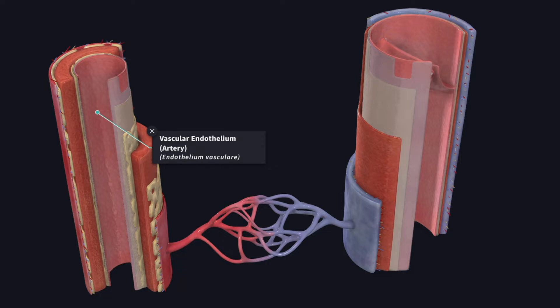The functions of the endothelium include providing a smooth internal lining to the blood vessels and heart. The endothelial cells are sensitive to alterations in blood pressure, blood flow, and oxygen tension in the blood. They secrete various substances that produce vasodilatation by influencing the tone of the muscles in the vessel wall. They also produce factors that control the coagulation of blood — under normal conditions clotting is inhibited, but when required, coagulation can be facilitated.